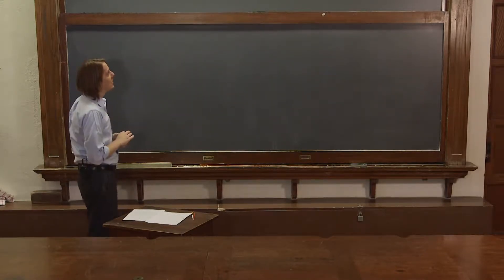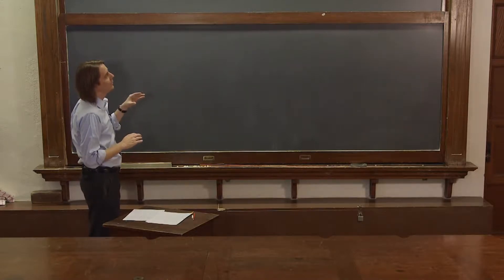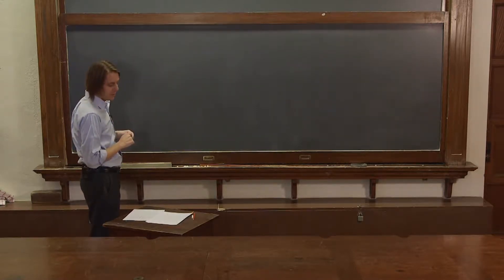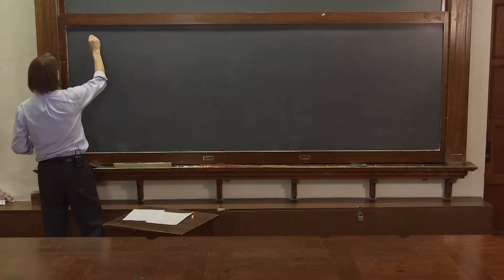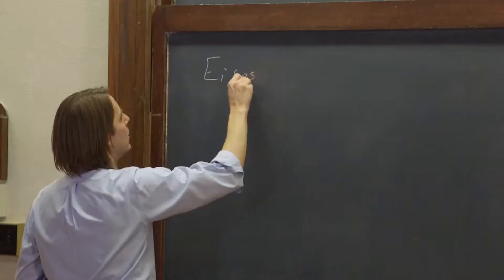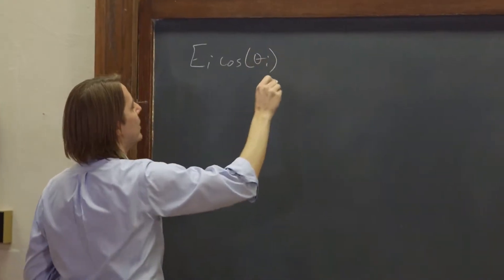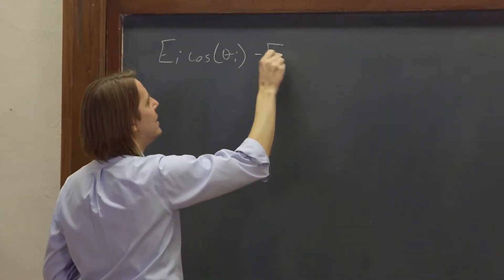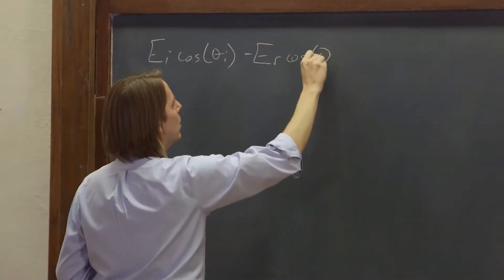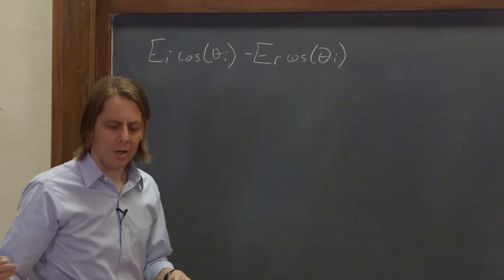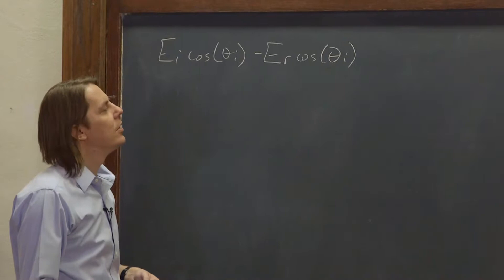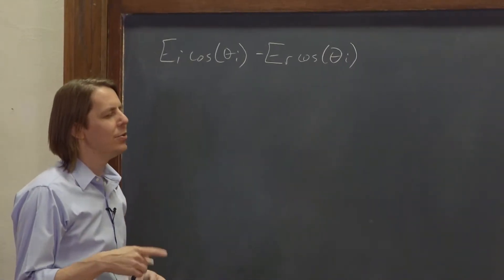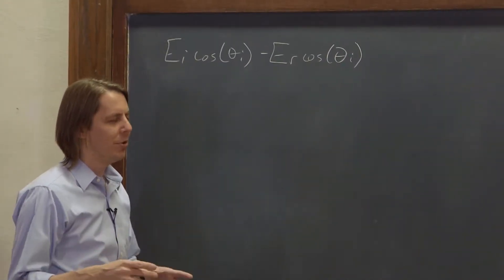So what we're going to do is start with the second one, the one that came from the continuity of the tangential component of the magnetic field, and that was that EI cosine θI minus ER cosine θI. What did that equal? That equaled n times ET cosine θT, the transmitted part.